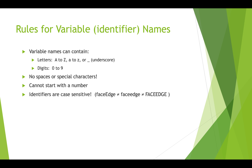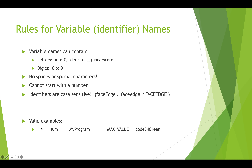When creating variables, there are rules about the names you can give them. Names can contain letters, numbers, and underscores — that's the only special character allowed. Other special characters like number signs, ampersands, percent signs, or hashtags should not be in variable names. Variables also can't start with a number, because Processing will try to read that as an integer. And as with everything in Processing, variable names are case sensitive. Valid examples include: 'i', 'sum', 'myProgram', 'maxValue', or 'code34green'.